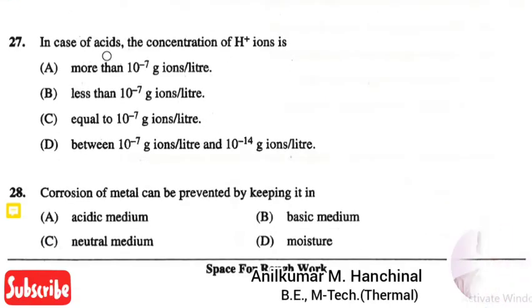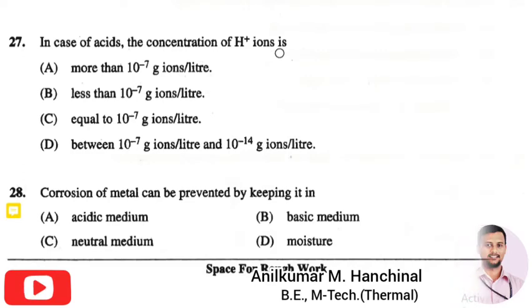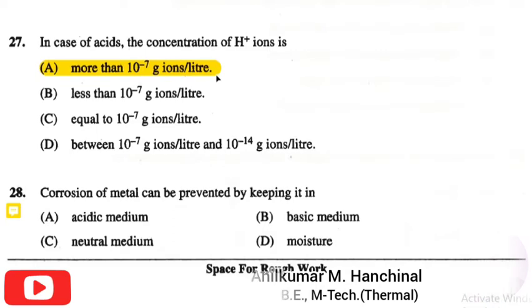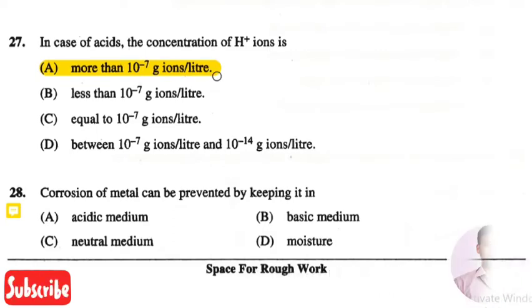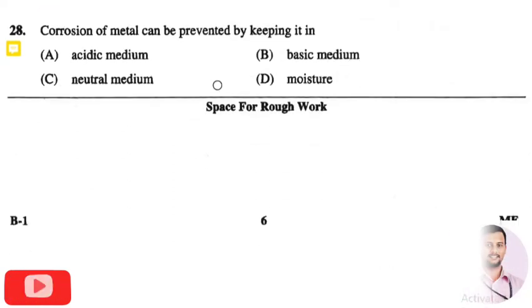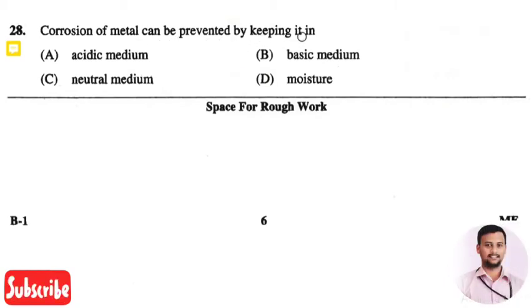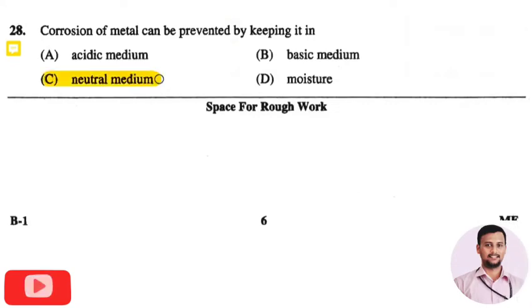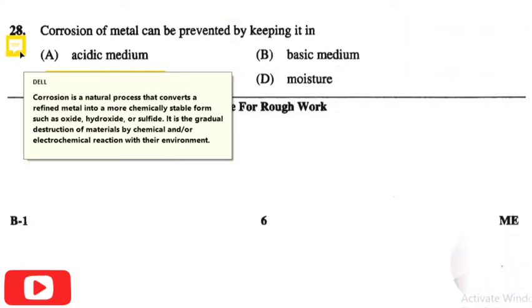The next question is: in case of an acid, the concentration of H⁺ ions is — the right answer is option one: more than 10⁻⁷ g ions per liter. The next question is: corrosion of metals can be prevented by keeping it in — the right answer is option three: neutral medium.